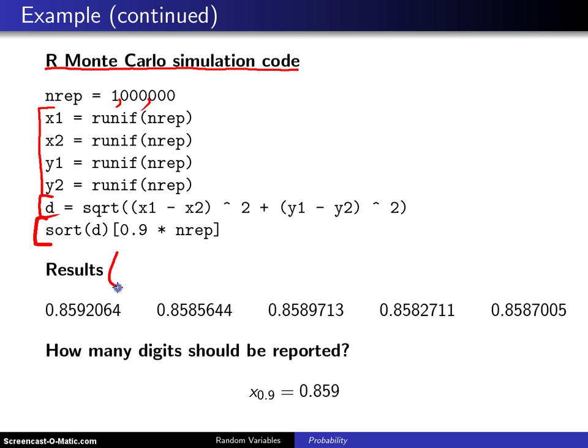So again, you never run a Monte Carlo simulation just once. I made five runs of this particular code here. And with each run, I get a fresh set of one million pairs of points, which means I get a fresh set of distances and a fresh estimate of the 90th percentile. And that's why you have five different numbers here. Now, one question that comes up is how many digits should be reported from this?